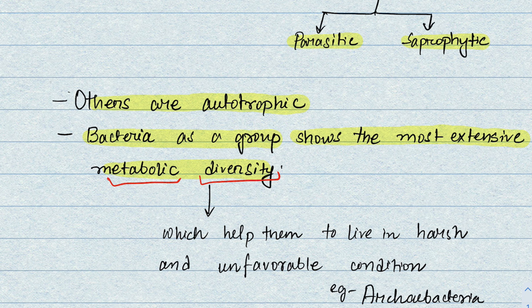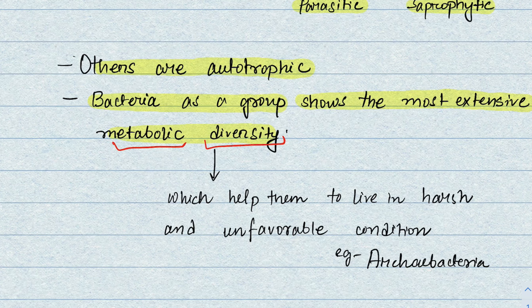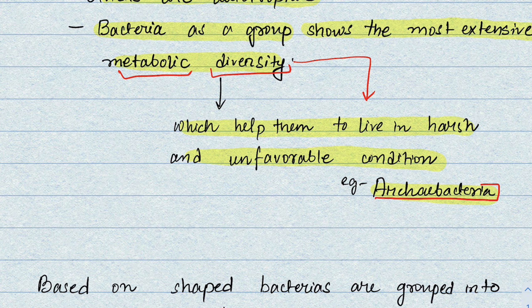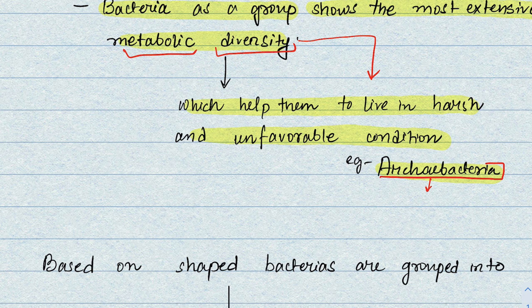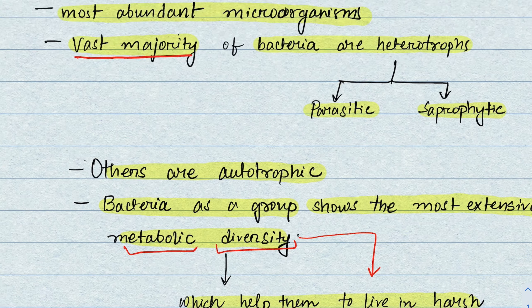Both anabolism and catabolism are seen in bacteria. This diversity of metabolism helps them live in harsh and unfavorable conditions — such as hot springs, deserts, snow, and deep oceans. For example, archaea bacteria live in several harsh environments such as salty areas and hot springs. We will cover archaea bacteria in the next video.